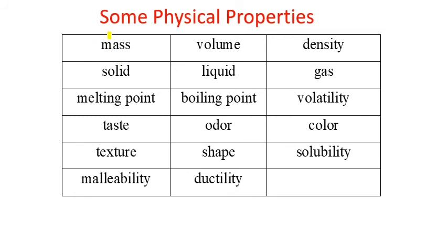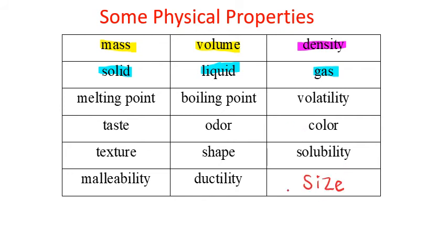If I'm going to categorize the main physical properties in one table: mass based on measurements, volume based on measurements — and the relationship between mass and volume we call density — so density is one physical property. State of matter — solid, liquid, gas — based on observation is another physical property. Anything related to measurements we call a physical property. Size is one example of measurement, so size is a physical property.